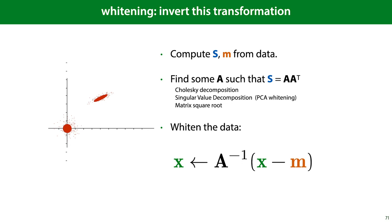Compare this to the standardization operation: there we subtract the mean and multiply by the inverse of the standard deviation — here we do the same but in multiple dimensions. Note that the standard deviation squared is the variance, just as the matrix A squared here gives us the covariance. So that's whitening.